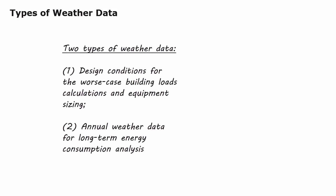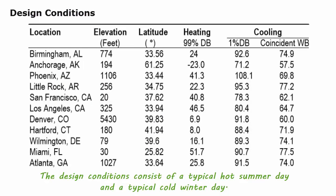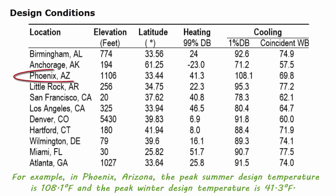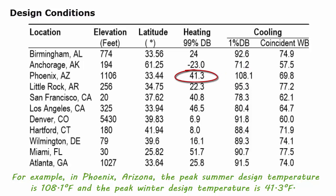Two types of weather data are used in building design. The first is design conditions for worst-case building load calculations and equipment sizing. The second is annual weather data for long-term energy consumption analysis. The design conditions consist of a typical hot summer day and a typical cold winter day, representing the worst-case peak heating and cooling loads the building systems are designed to handle. For example, in Phoenix, Arizona, the peak summer design temperature is 108.1 degrees F, and the peak winter design temperature is 41.3 degrees F.